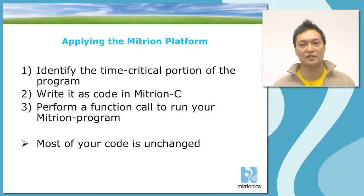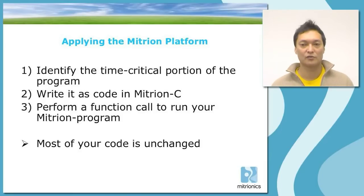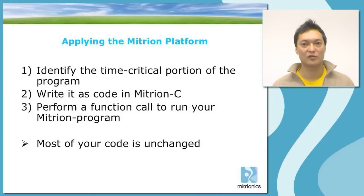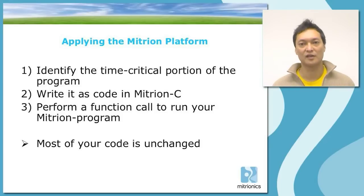The main point is that most of your code is unchanged. At Mitronics, we did a port to the Mitron processor of a bioinformatics code called BLAST. The BLAST code consists of a bit less than 2 million lines of code. However, the hotspot — the time-critical portion of the program — only ended up as less than 1,300 lines of code in Mitron C. This is the portion that actually had to be ported, and the rest of the source code was left alone.